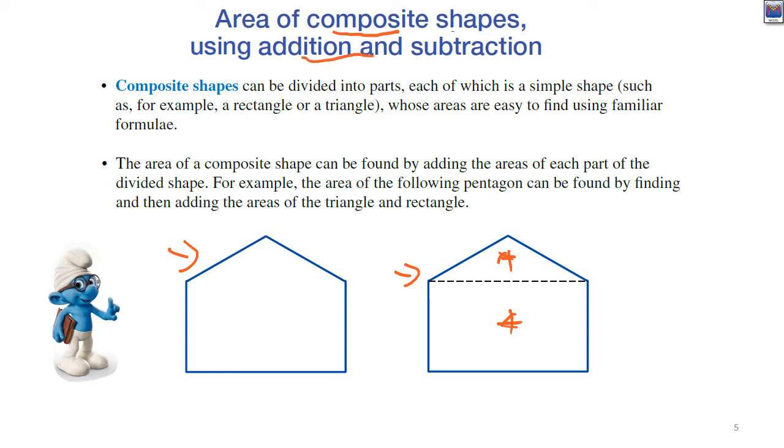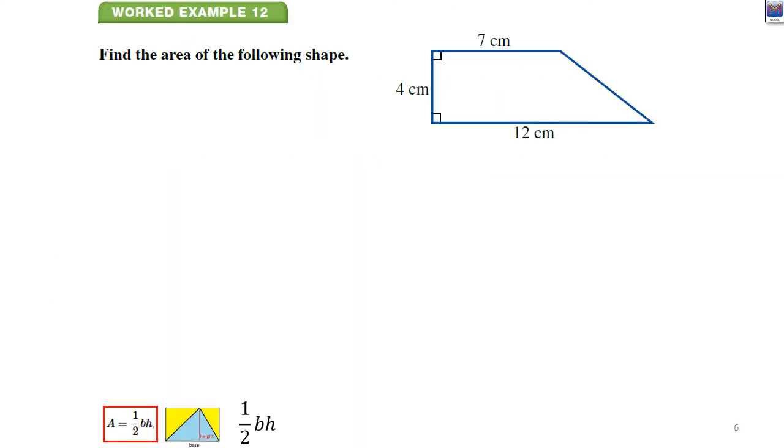When I say addition and subtraction, I mean that sometimes if there's like a corner out of it, we might work out the area of that bit and take it away from the rest, like subtract its area away. Let's look at some examples.